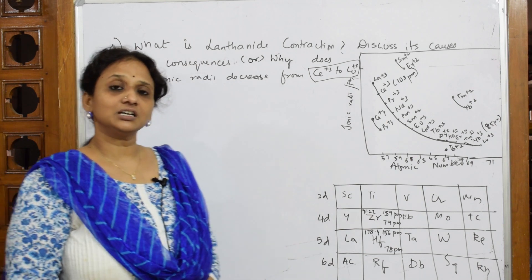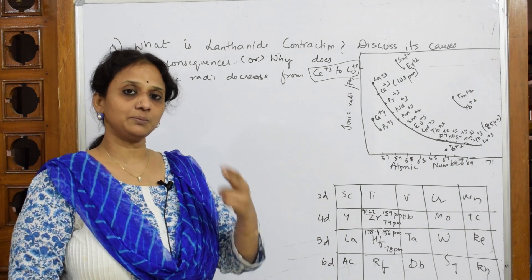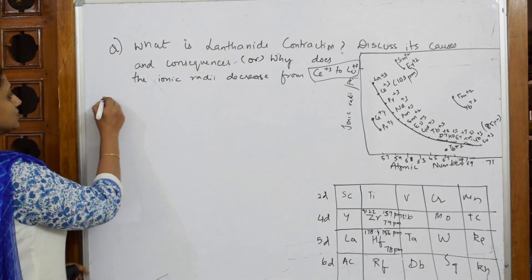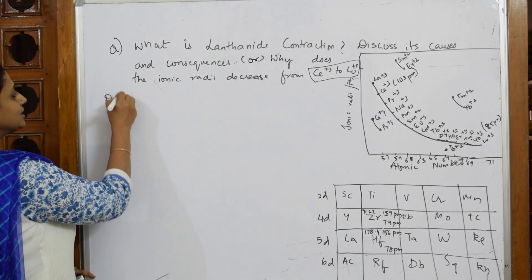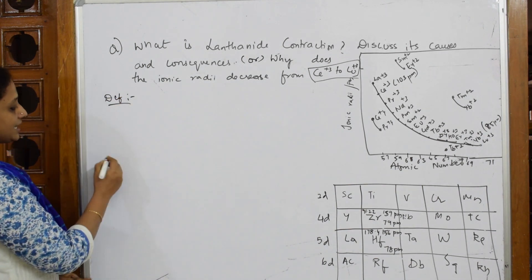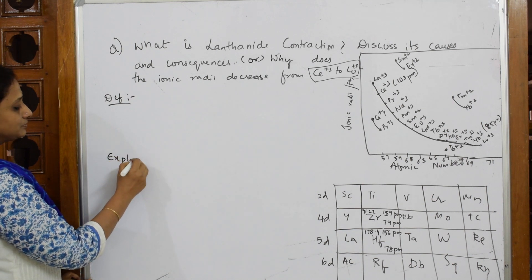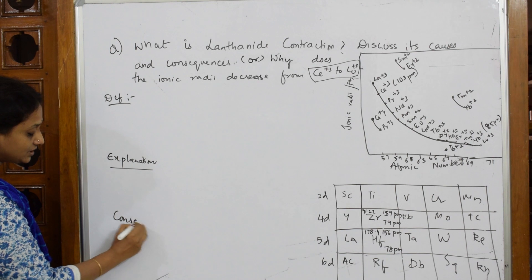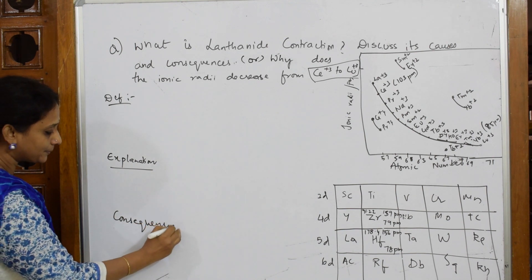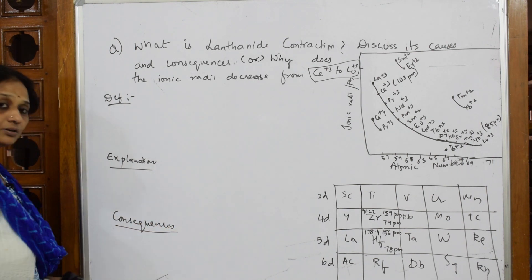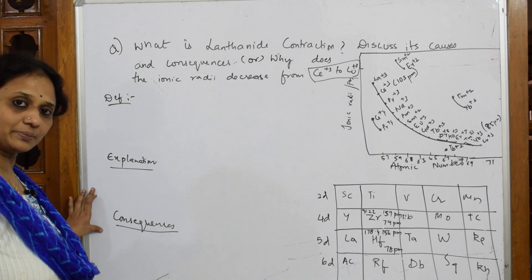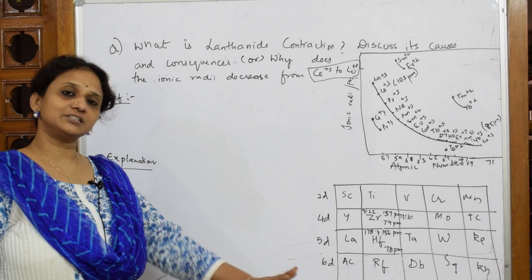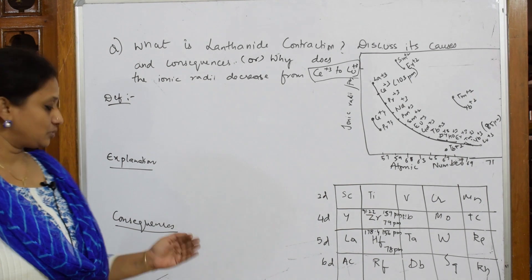In your board paper marking scheme, three important subheadings should be given when writing this answer: first, definition; next, explanation; next, consequences. These three should appear as subheadings in the board paper. If you write those three subheadings and explain the answer under each, you will be allotted full marks for that particular question.